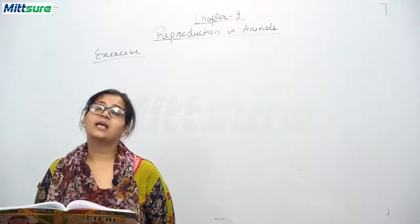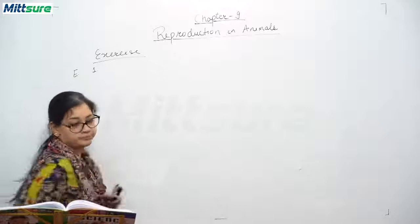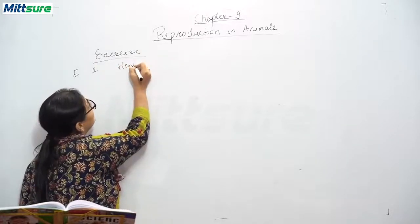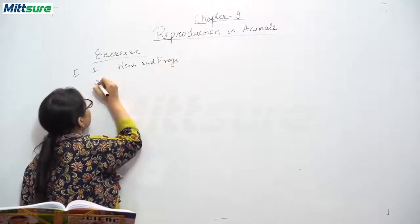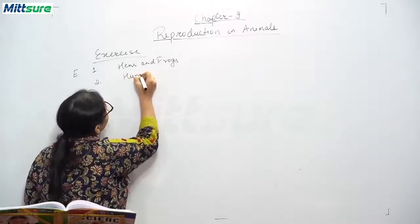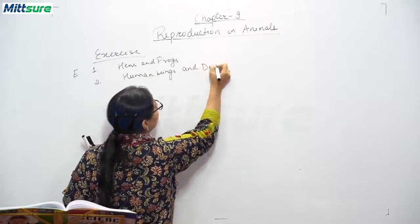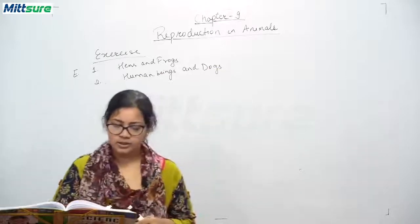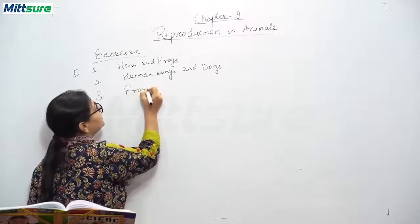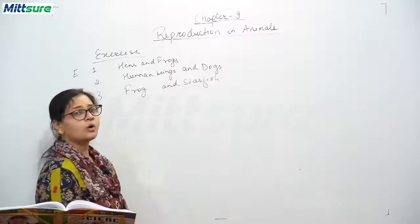Now Section E: give examples of the following. First, two oviparous animals: hens and frogs. Second, two viviparous animals: human beings, because we give birth to young ones, and dogs, which give birth to puppies — or you can say cats and kittens. Third, two animals showing external fertilization: frog and starfish. Students, these are not mandatory answers; you can change your answers according to yourself and take other examples from the book.